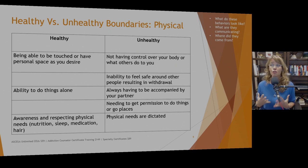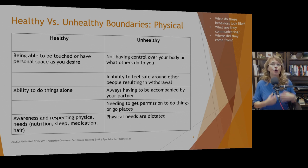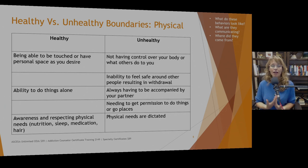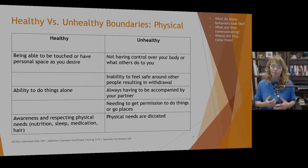If somebody grew up in an abusive household where they were not allowed to say no or have control of their own body, they may have difficulty asserting physical boundaries now. A healthy physical boundary includes the ability to do things alone — go to the grocery store, go for a walk — without needing to get permission. Another healthy physical boundary is awareness and respect of one's physical needs: nutrition, sleep, medication, and so on.